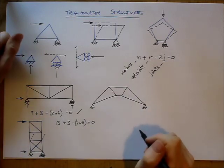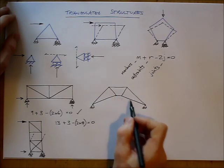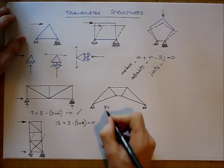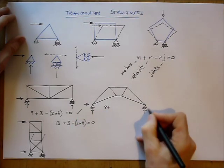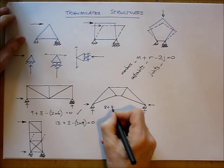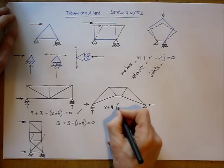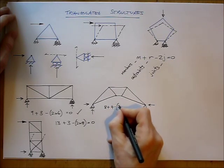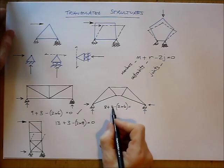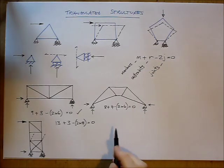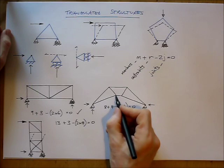Members, 1, 2, 3, 4, 5, 6, 7, 8. Restraints, that's a pin, so that has 2. That's a pin, so that has 2. So that's 4 in total. Number of joints, 1, 2, 3, 4, 5, 6. Minus 2 times 6. 8 plus 4, 12. 2 times 6, 12. Yep. Again, 0. Well, it's statically determinate, but are there any mechanisms? And the answer is yes.